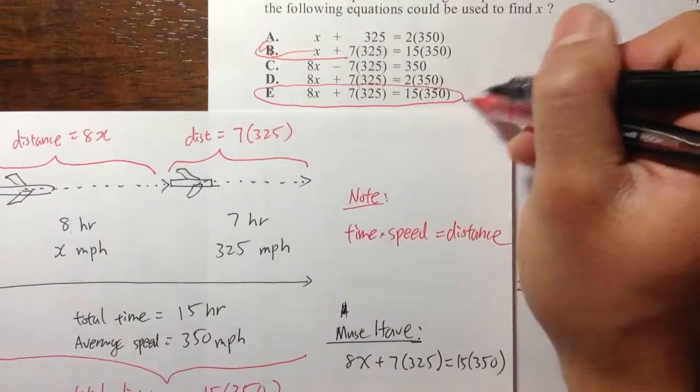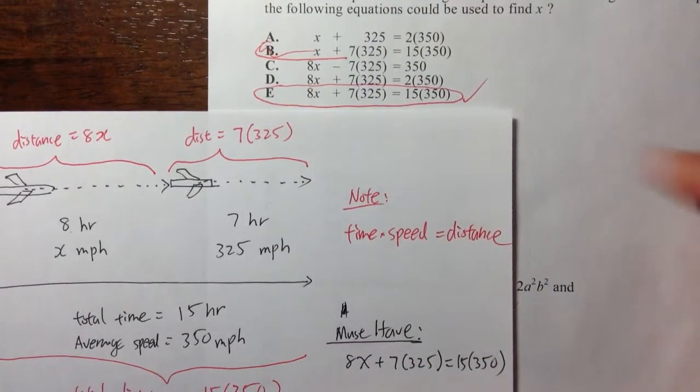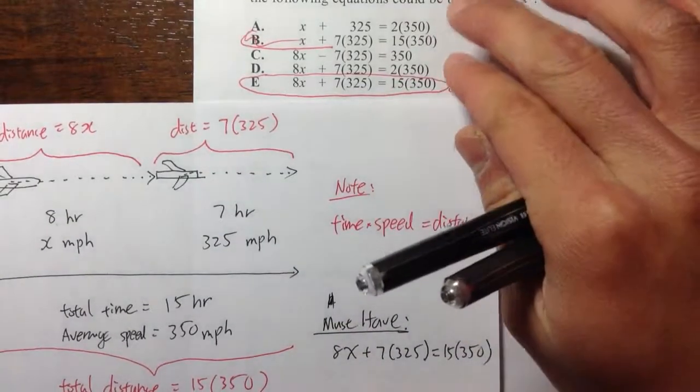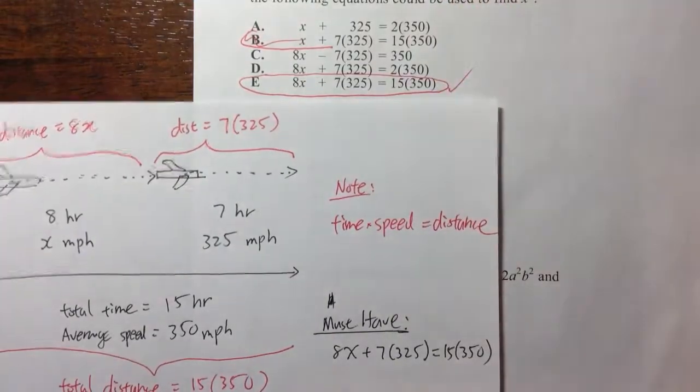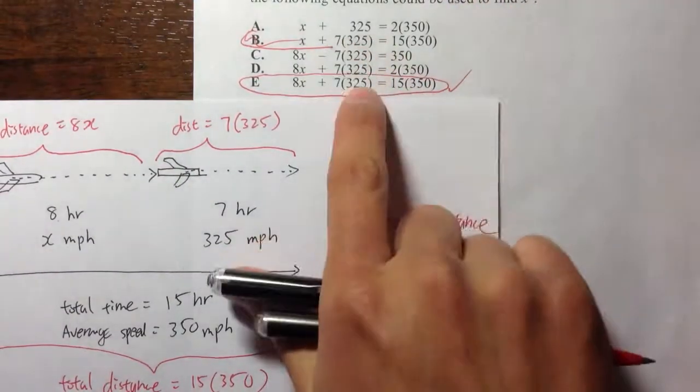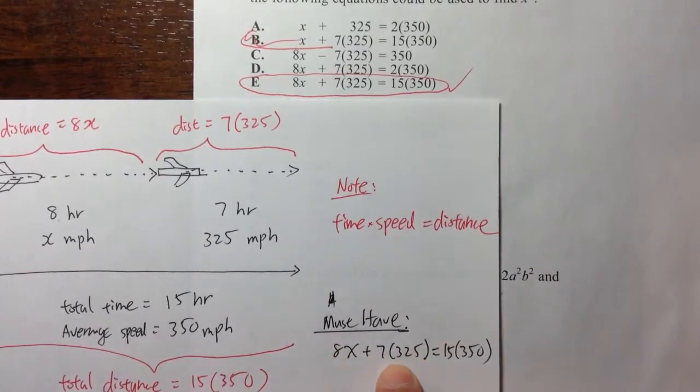So be really careful when you select your answers, because a lot of these multiple choices, their answer choices, they all look similar. So just make sure that you pick the right one. So 8x plus 7 times 325 is equal to 15 times 350.